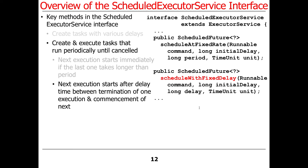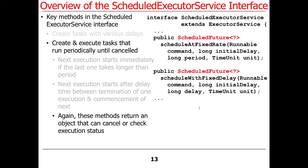There's another method called scheduleWithFixedDelay. In this case, execution starts after a delay between the termination of one execution and the commencement of the next. So once the task finishes, it waits the designated delay amount before running again. These methods return objects — the scheduled future — that can be used to cancel or check the execution status.